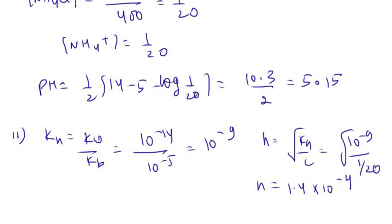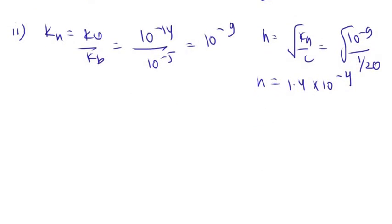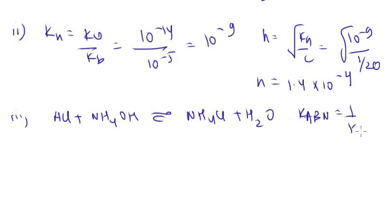We also calculate the equilibrium constant for the neutralization reaction HCl + NH4OH → NH4Cl + H2O. For a neutralization reaction between a strong acid and a weak base, K = 1 / KH = 1 / 10⁻⁹ = 10⁹.